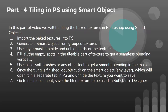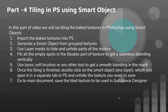Hello and welcome to part 4 of the photogrammetry process for vegetation to be used in Unreal Engine 5. In this part of the video we will be mainly focusing on tiling in Photoshop. This looks a bit intimidating but it is not — just follow my steps one by one and it will be easy. We will start by importing the textures into Photoshop.